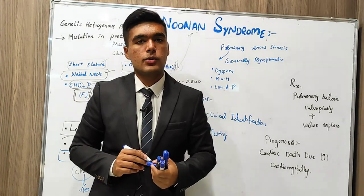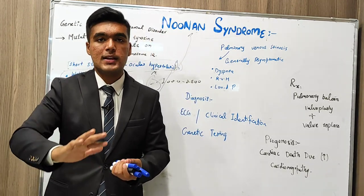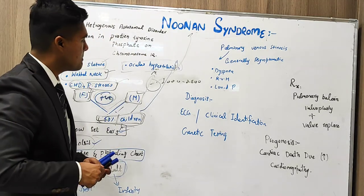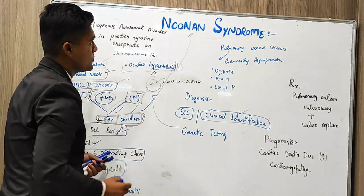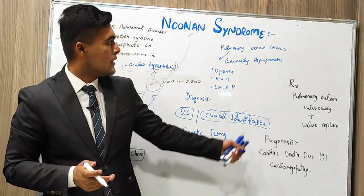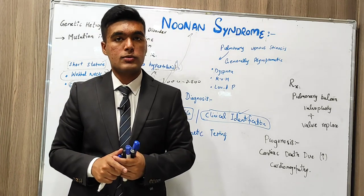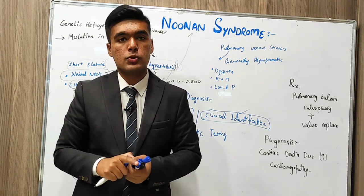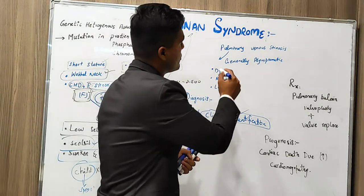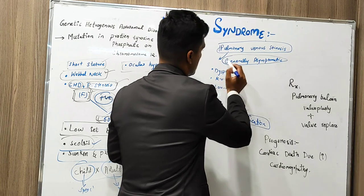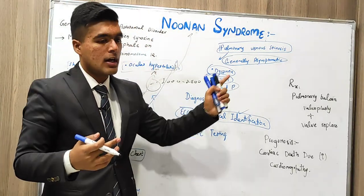To identify, investigate, diagnose, and treat it: the main investigation is genetic investigation, as well as ECG, and clinical symptoms and signs shown by the patient. For diagnosis, in genetic testing there is a chromosome 12 anomaly, especially involving non-receptor type and protein kinase, which ultimately confirms Noonan syndrome. There is also pulmonary venous stenosis which is asymptomatic but shows dyspnea, a loud P2, and right ventricular hypertrophy signs.